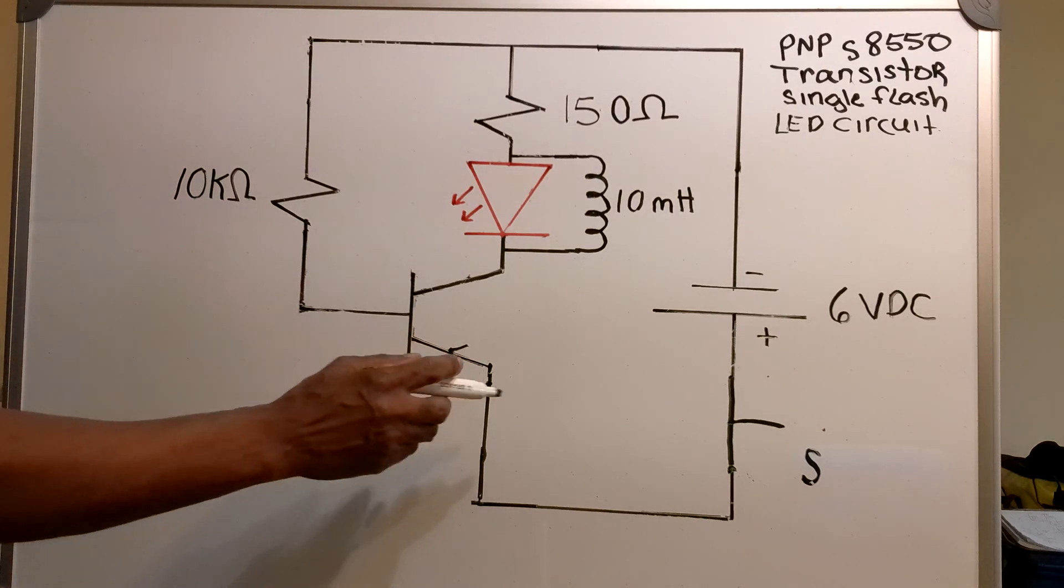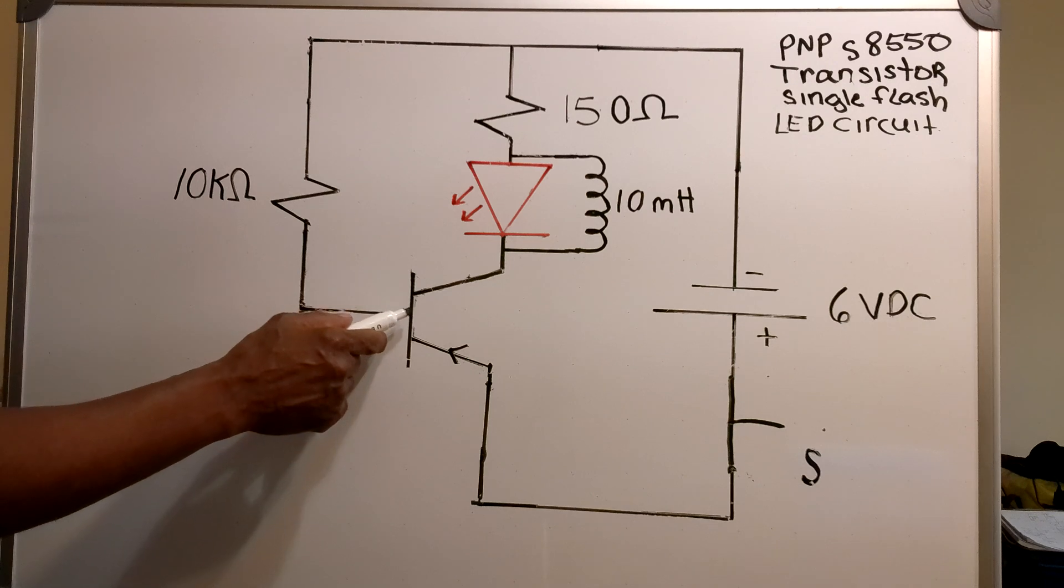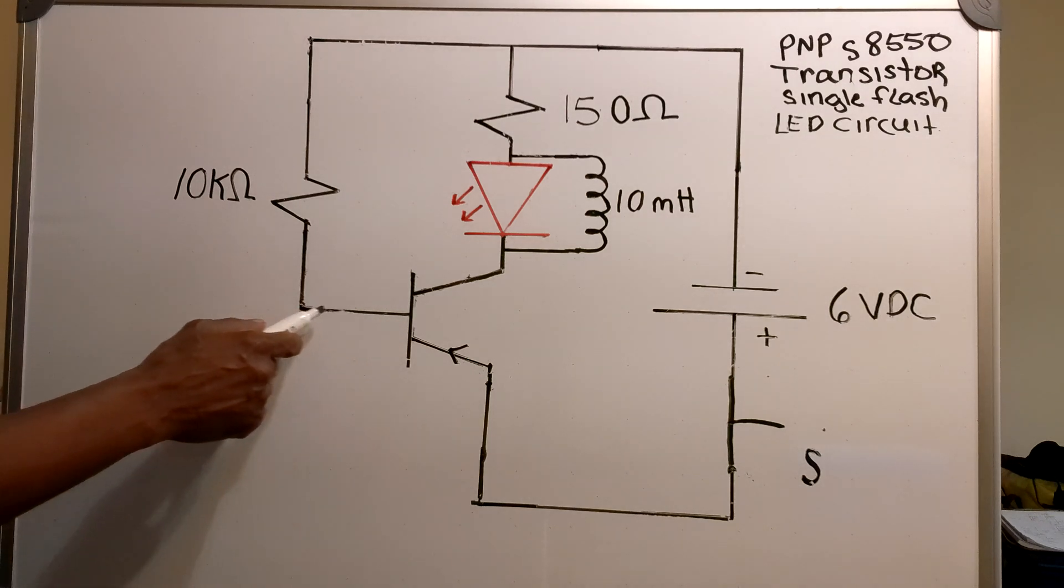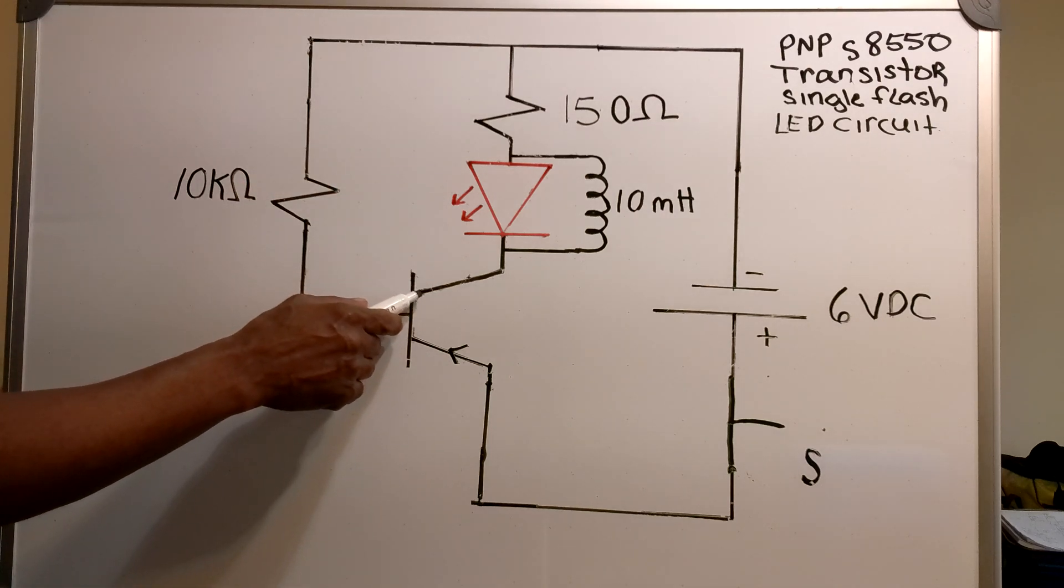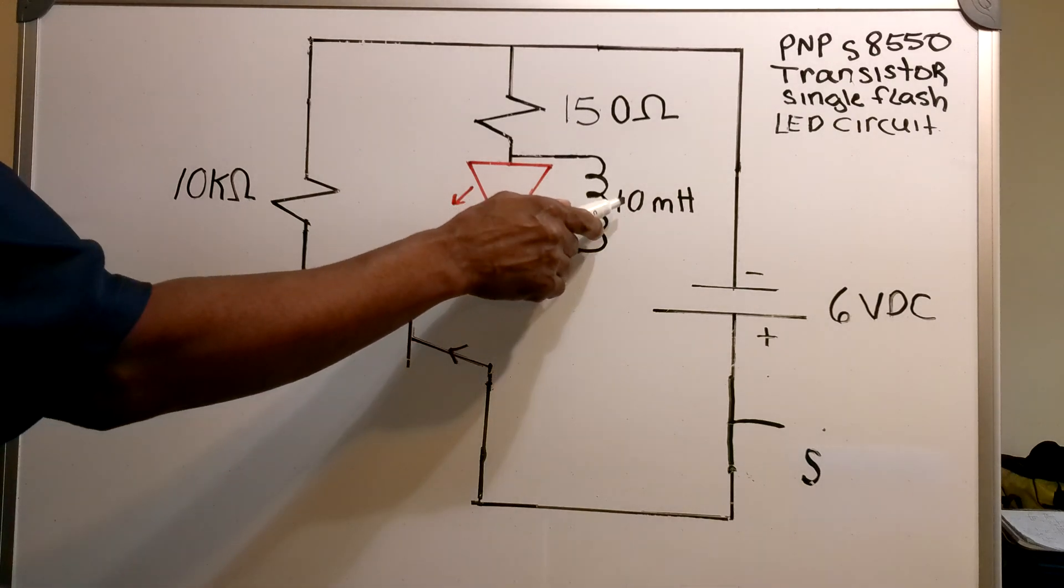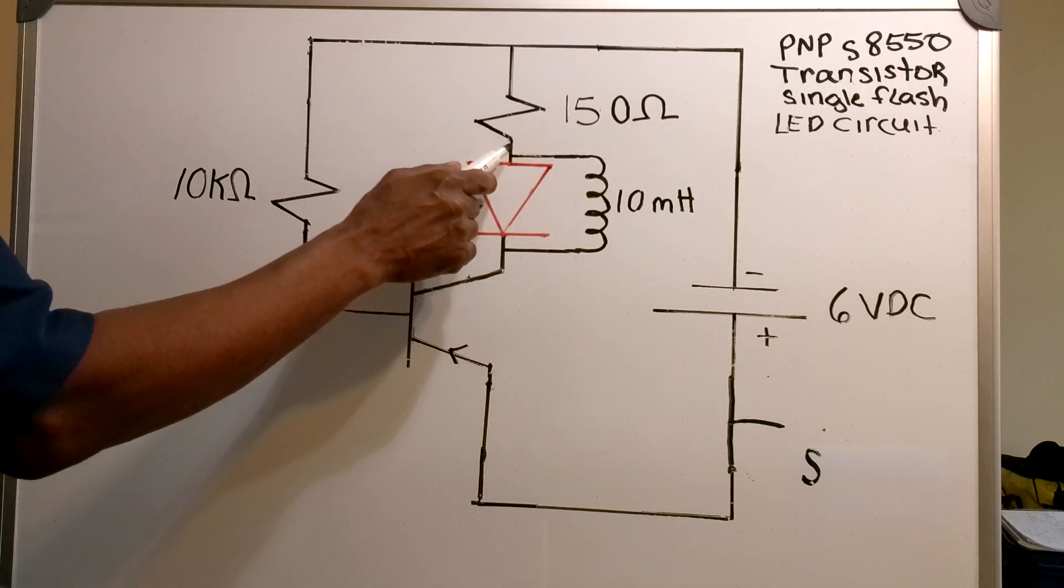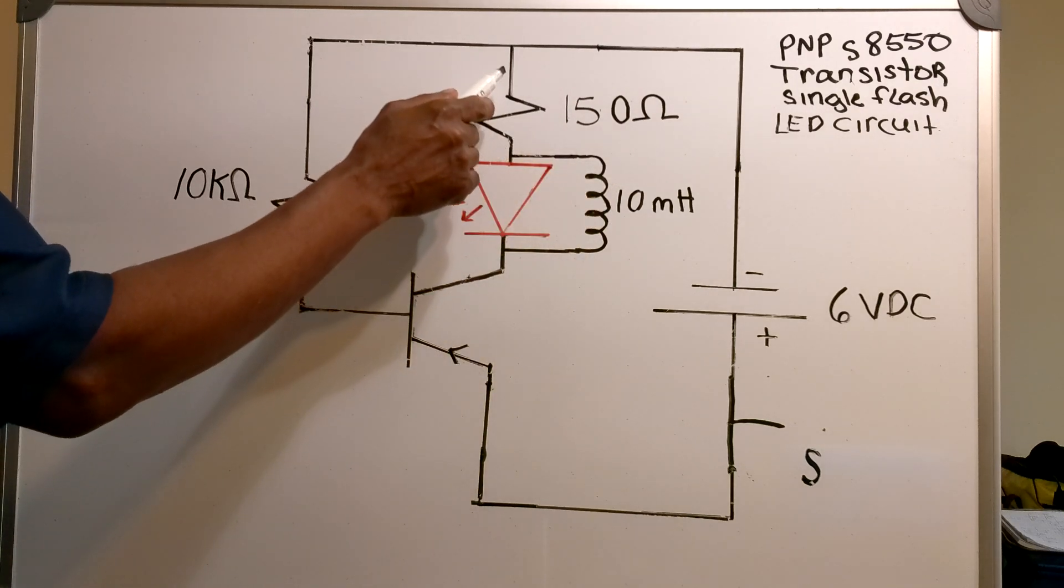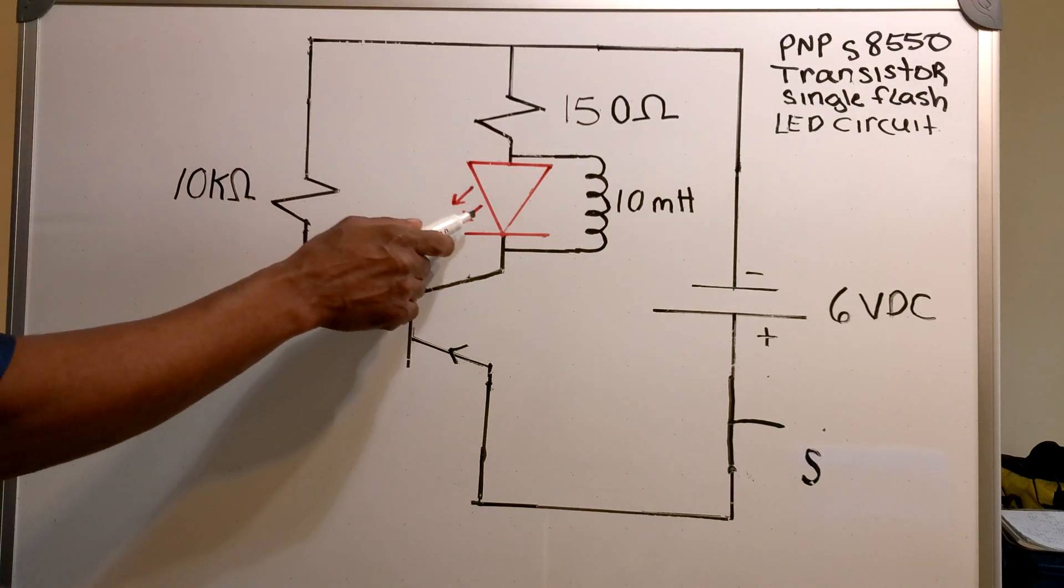Okay, now that the switch is closed, the current is flowing through the emitter and the base current flows through the base and turns the transistor on. The collector current is flowing through the collector, flows through the 10 millihenry inductor and flows around the diode and flows through the 150 ohm resistor.